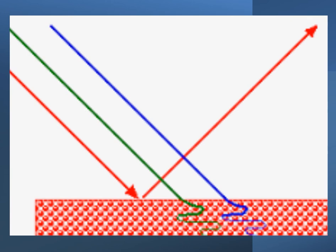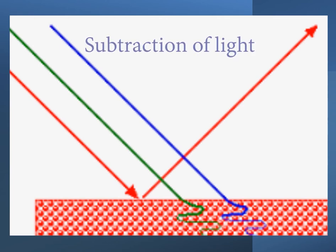We can see an object because light is reflected by the object to our eyes. The light which has the same color as the opaque object will be reflected directly into our eyes, while the light of other colors will be absorbed by the object. This phenomenon is known as subtraction of light.